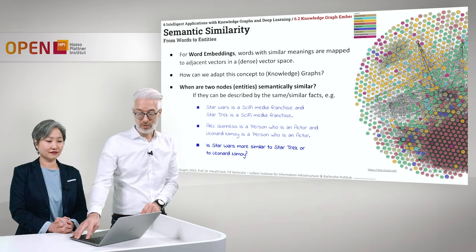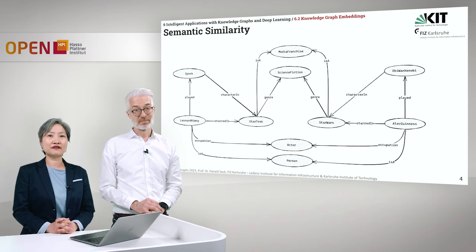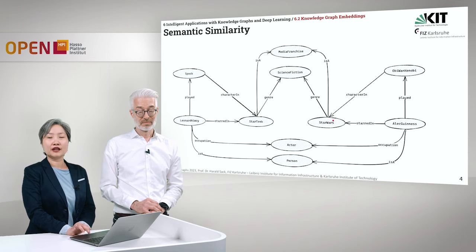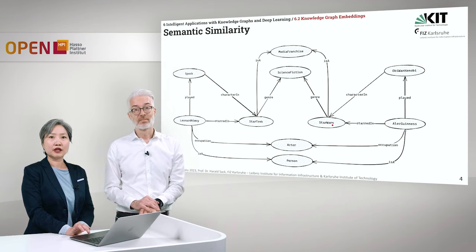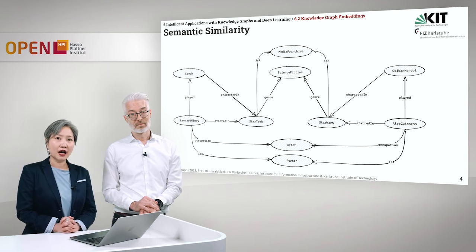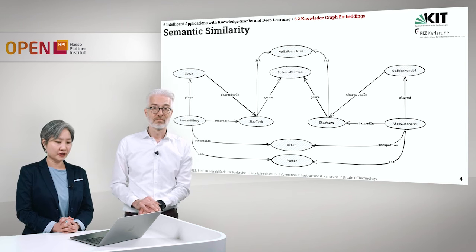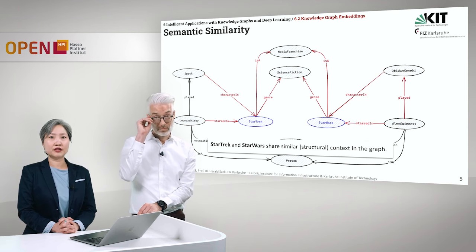But can we see this from the graph? Here is a graph depicting the two famous sci-fi franchises. To the left we have Star Trek and to the right we have Star Wars. On these entities there are also connected entities, for example the main characters of Star Trek and the main characters of Star Wars, and we can also see the classes that relate to the characters. The question is how do we know that Star Trek and Star Wars are similar to each other just by looking at this graph? Well, we can say that Star Trek and Star Wars share similar structure.